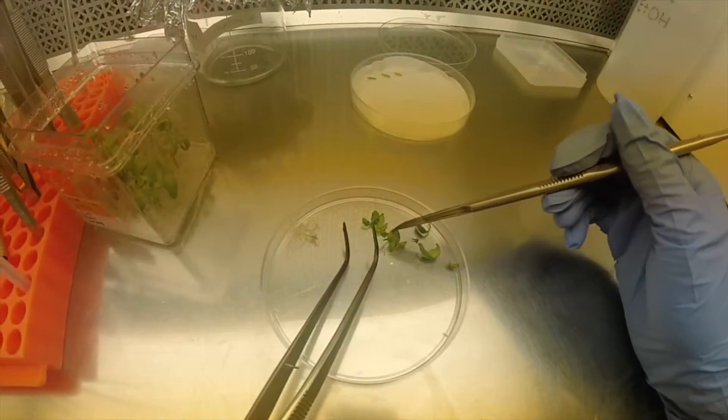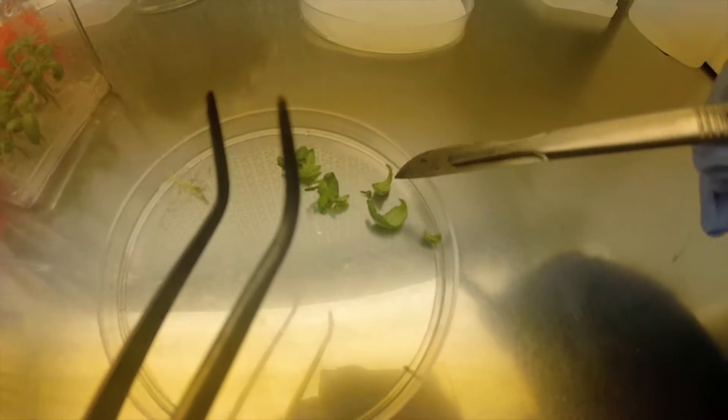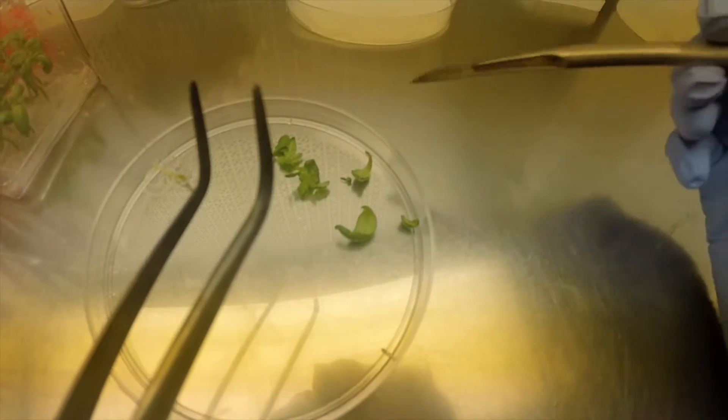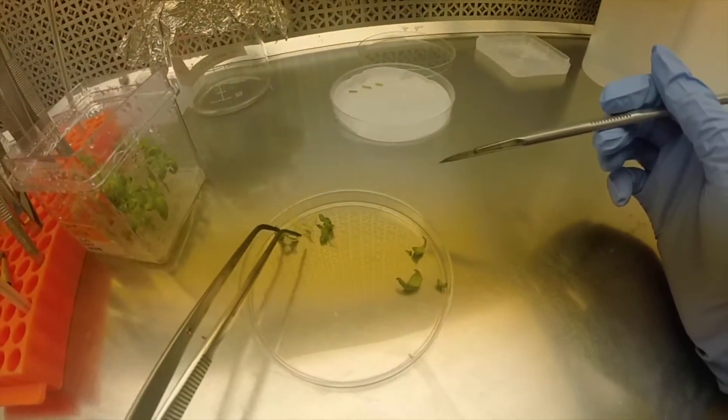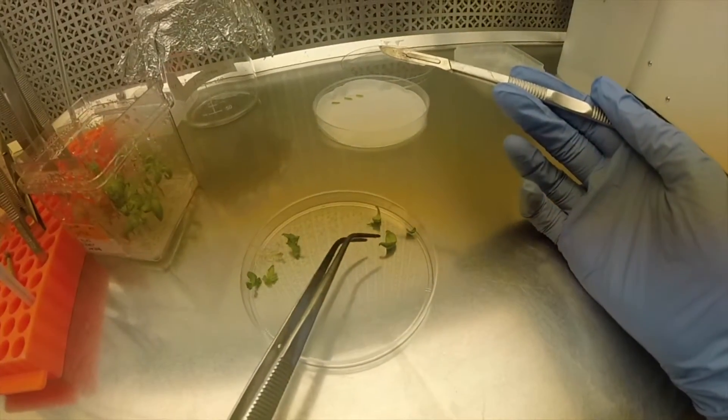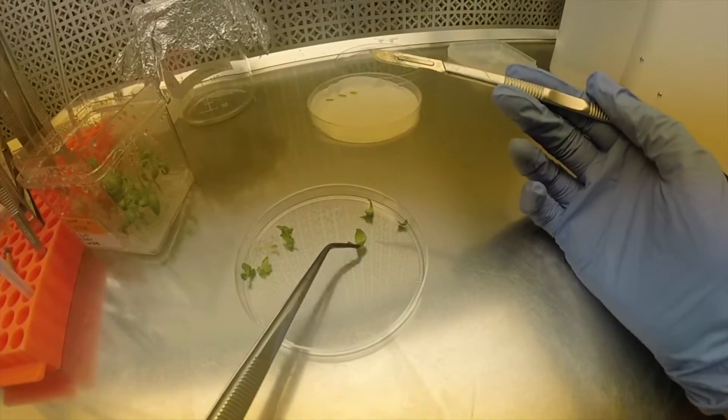These are the true leaves that are waste and these are the cotyledons. We'll set the true leaves aside. Most tomato plants have two cotyledons per plant.